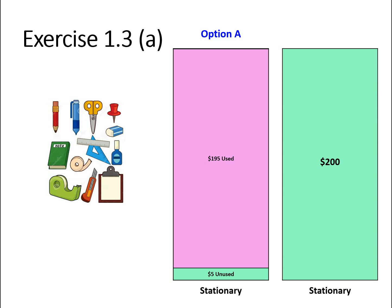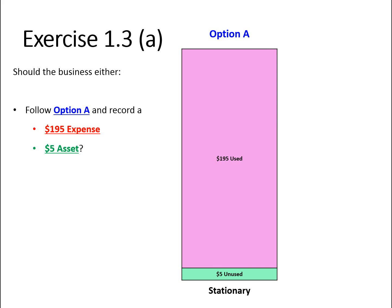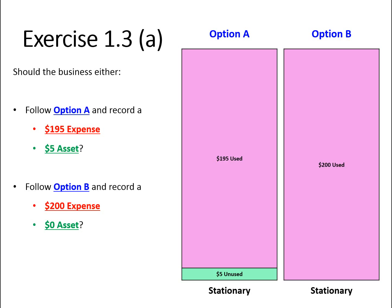A second option: considering there's only $5 left, why don't we just record a $200 expense? So the question is, should the business follow Option A and record a $195 expense and $5 asset, or follow Option B and record a $200 expense and $0 asset?